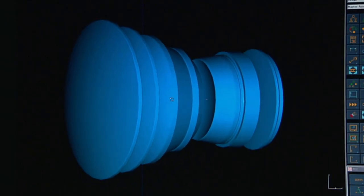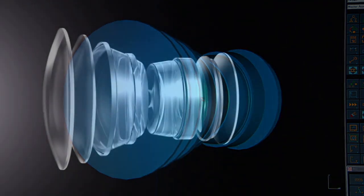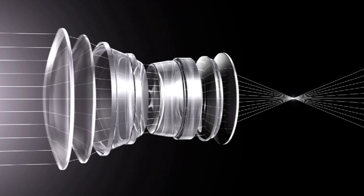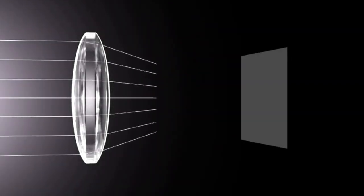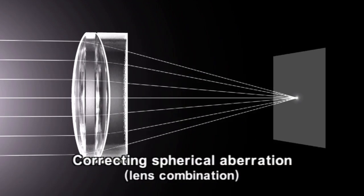The first step toward correcting aberrations is to combine lenses with different characteristics, such as convex and concave lenses. Spherical aberration occurs in opposite directions in the case of convex and concave lenses, so aberrations can be corrected by combining these two lens types.